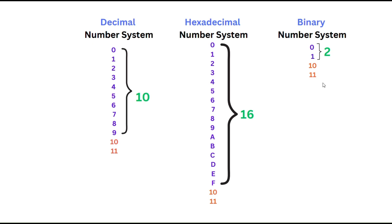This is just to mention the different types of number systems. Number systems differ because they have different counts of available symbols. The important thing to understand here is that in the binary number system we have only two symbols, and with the help of only those two symbols we have to communicate everything. We'll understand the significance of binary numbers shortly.